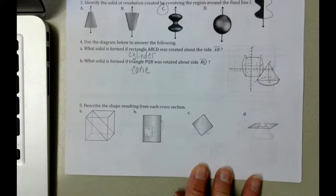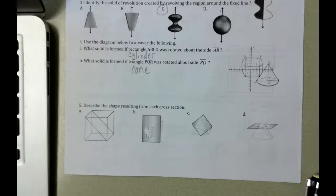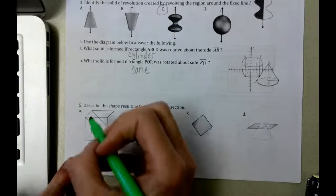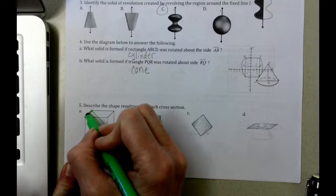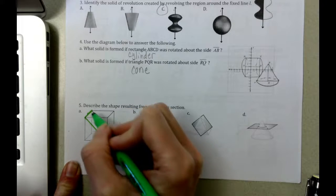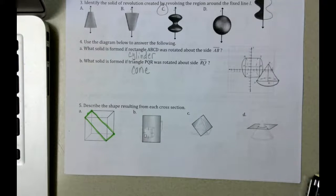Lastly, on problem number five, describe the shape resulting from each cross section. Well, as I pull out my highlighter again, our cross section here is in this particular case a rectangle.